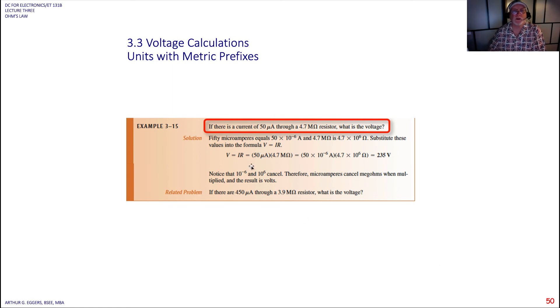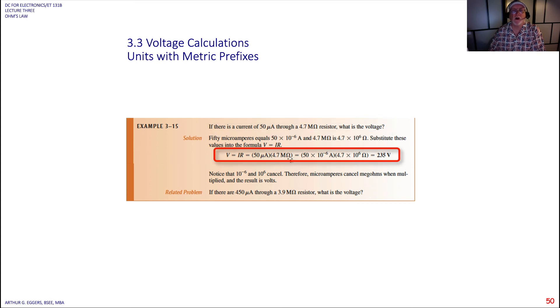So when I put it in the relationship, 50 microamps, 4.7 mega ohms, 10 to the minus sixth, 10 to the sixth, those disappear because they cancel out. And I'm left with 4.7 times 50 or 235 volts.